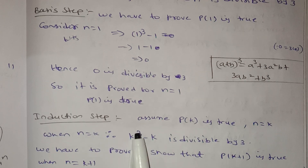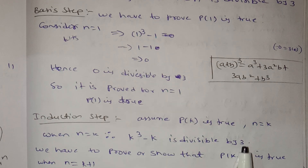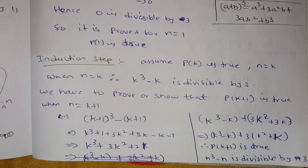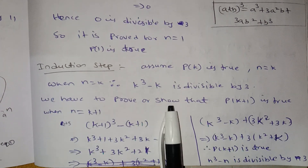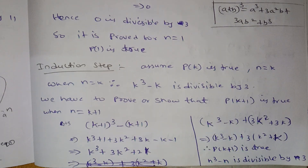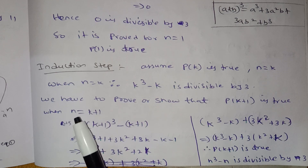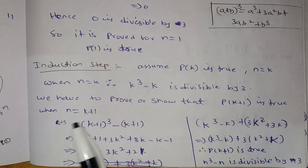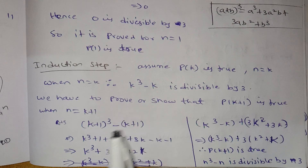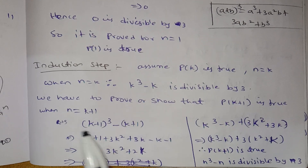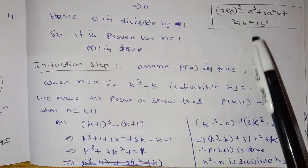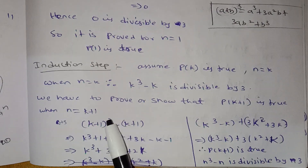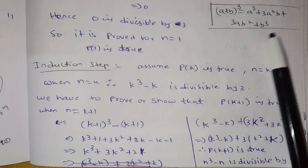We have to prove that P of k plus 1 is true. We have to show that n equals k plus 1: (k+1) cube minus (k+1). We expand (k+1) whole cube using the formula, because we have the cube expansion.